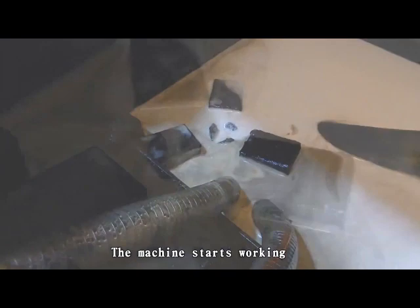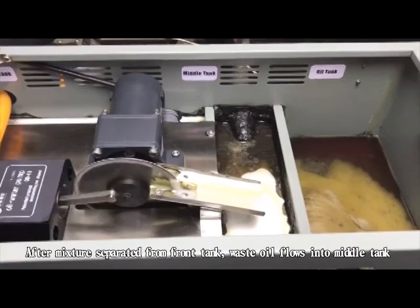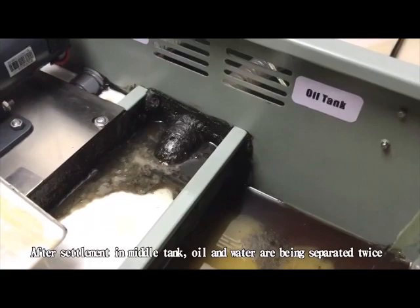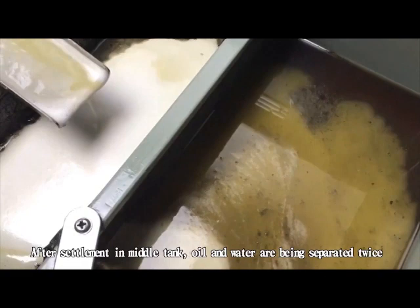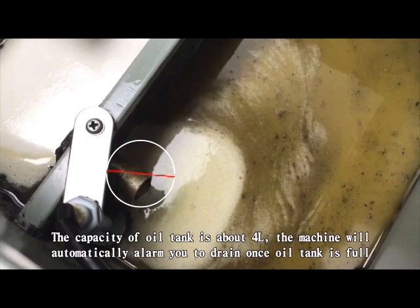After mixture is separated from the tank, waste oil flows into middle tank. After settlement in middle tank, oil and water are separated twice and oil slake flows into the oil tank. The capacity of oil tank is about 4L. The machine will automatically stop once oil tank is full.